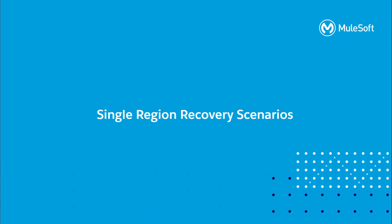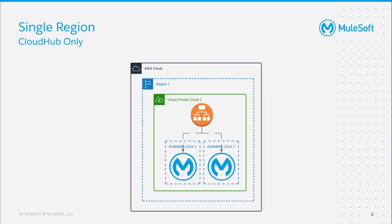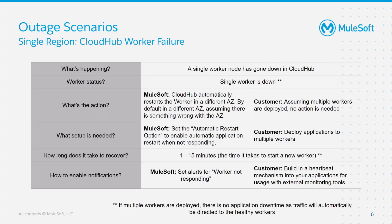Let's discuss in more detail what single region failures look like. We have our single region CloudHub architecture where we have one application with two workers, each deployed by default in different availability zones. In this scenario, we will discuss what it looks like when one worker goes down but the other worker is still available. This scenario is just as applicable if there are more than two workers deployed. When looking at a single worker failure in CloudHub, if multiple workers are deployed, the MuleSoft application is still available as all traffic will automatically be directed to the healthy node by the load balancer.